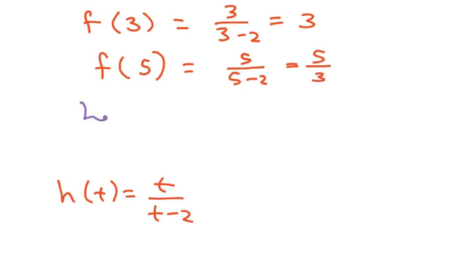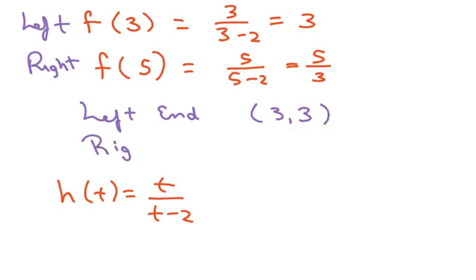So here's your left, this was your right. So your left endpoint is 3 comma 3 and your right endpoint is going to be 5 comma 5 thirds.